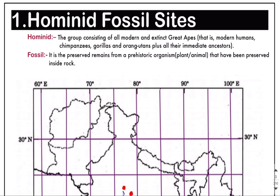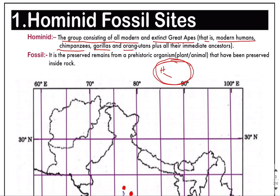Now before going into what are the sites related with the hominid fossils, let us see exactly what hominids means. Hominids is a group which consists of modern human beings, chimpanzees, gorillas, and orangutans, and all their ancestors. So when they are all combined, that becomes the hominids group.